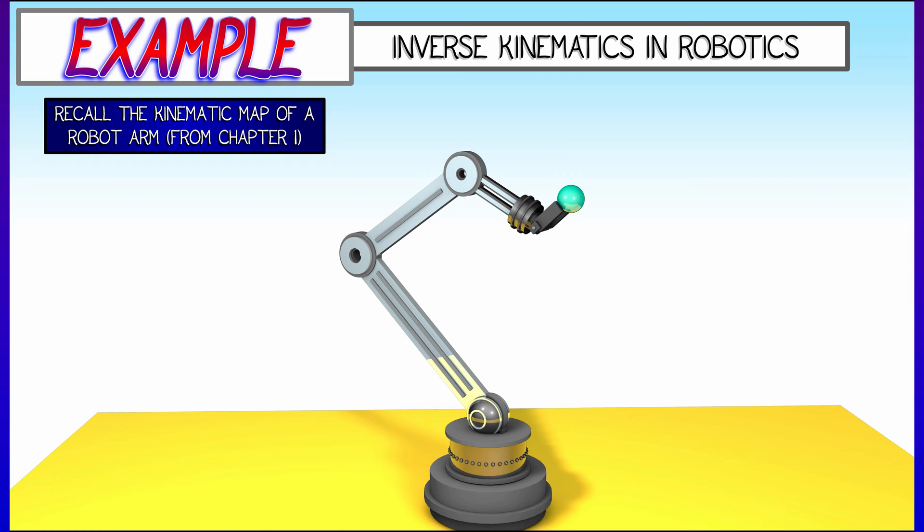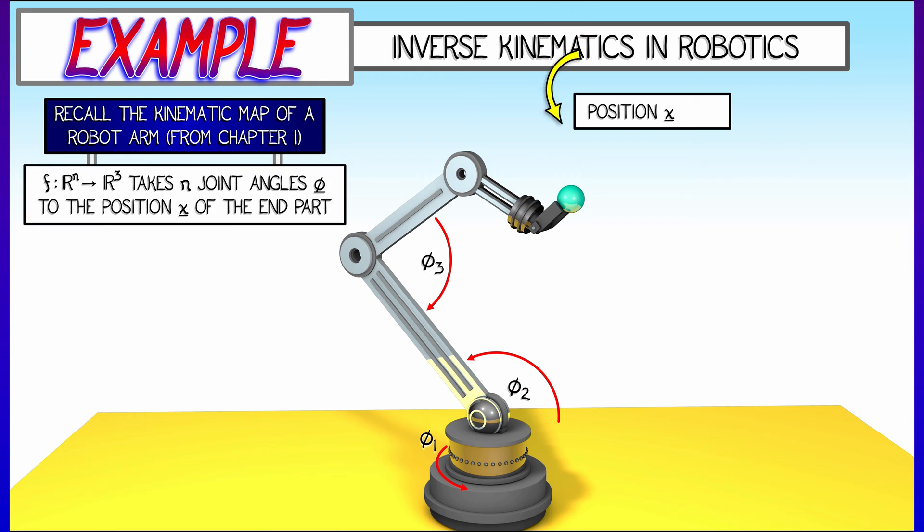If you recall back from chapter one, when we talked about the kinematic map of a robot arm, this is the function that takes as inputs all the different joint angles, and then as an output gives you, let's say, the position of the end effector, of the part that the robot arm is holding.